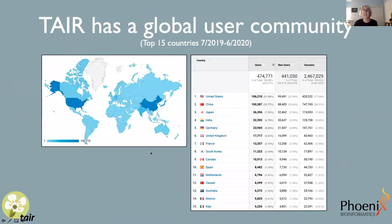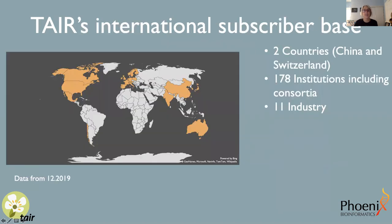TAIR is used by tens of thousands of researchers worldwide, and we have a global user community. The biggest users tend to be in the United States and China. We have an international subscriber base that includes two entire countries, a number of institutions, consortia, and some industry subscribers. That worldwide user community is reflected in our subscriber base, and our funding is now distributed in a way that more reflects our user community.